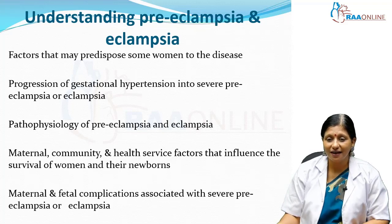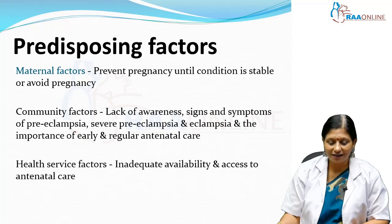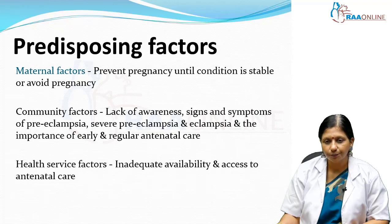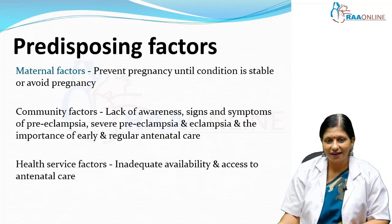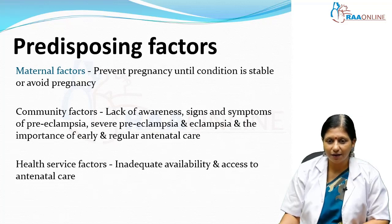We will also discuss the maternal, community, and health service factors that can influence the survival of women and reduce maternal mortality, as well as the maternal and fetal complications associated with severe pre-eclampsia and eclampsia. To prevent maternal mortality due to pre-eclampsia: if the patient is hypertensive, advise them not to become pregnant until blood pressure is controlled. In the community, spread awareness so patients with high blood pressure during pregnancy attend clinics. Clinics should be adequately equipped with anti-hypertensive agents, magnesium sulfate, and anti-seizure medication.